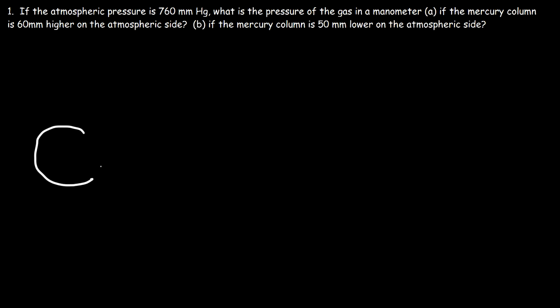Now let's answer the second part of the problem: if the mercury column is 50 millimeters lower on the atmospheric side, what is the pressure? Once again, let's draw a picture.